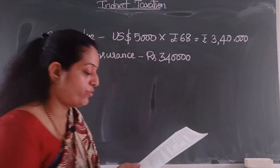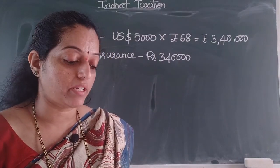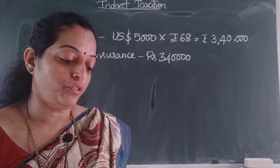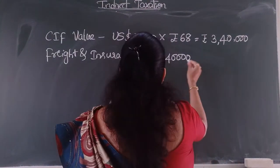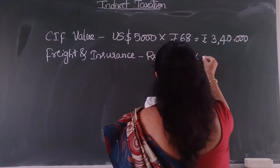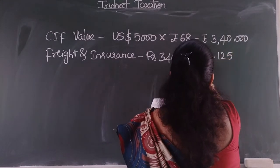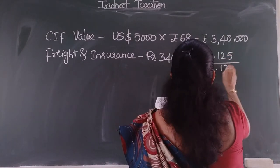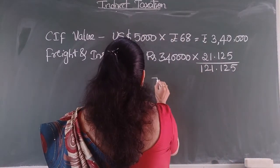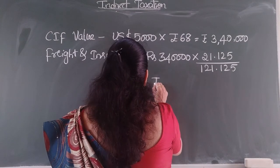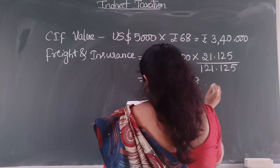In this case, freight and insurance are not available, so we need to take 20 percent and 1.125 percent of the FOB value. So we take 20 percent plus 1.125 percent, which gives 21.125, divided by 121.125. The answer is rupees 59,298.